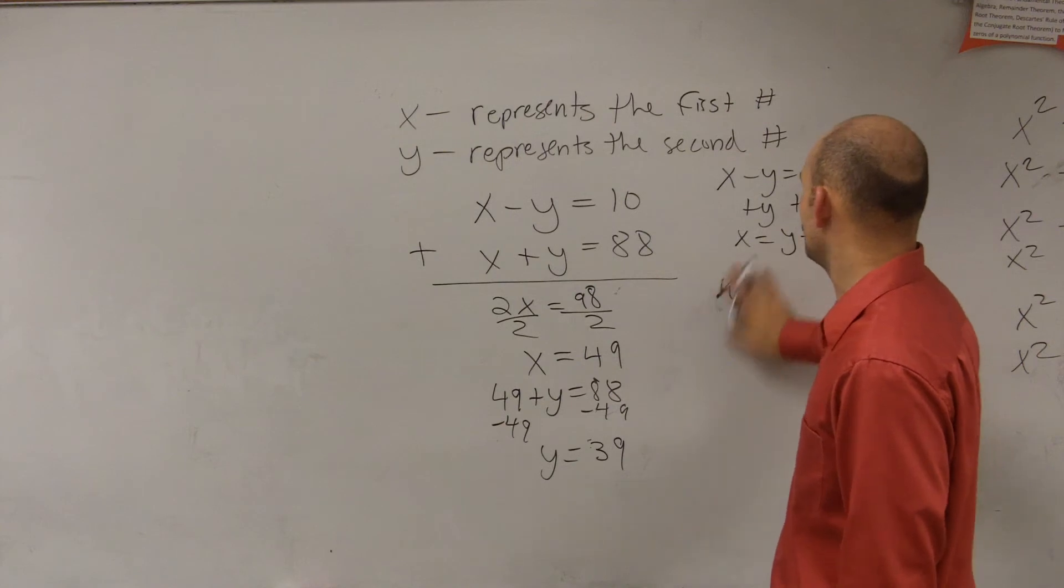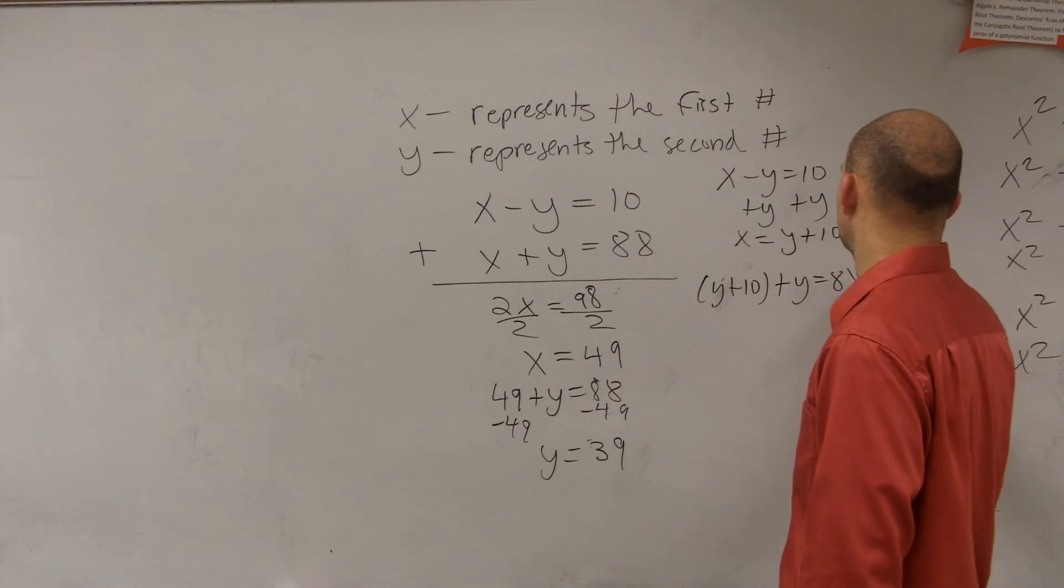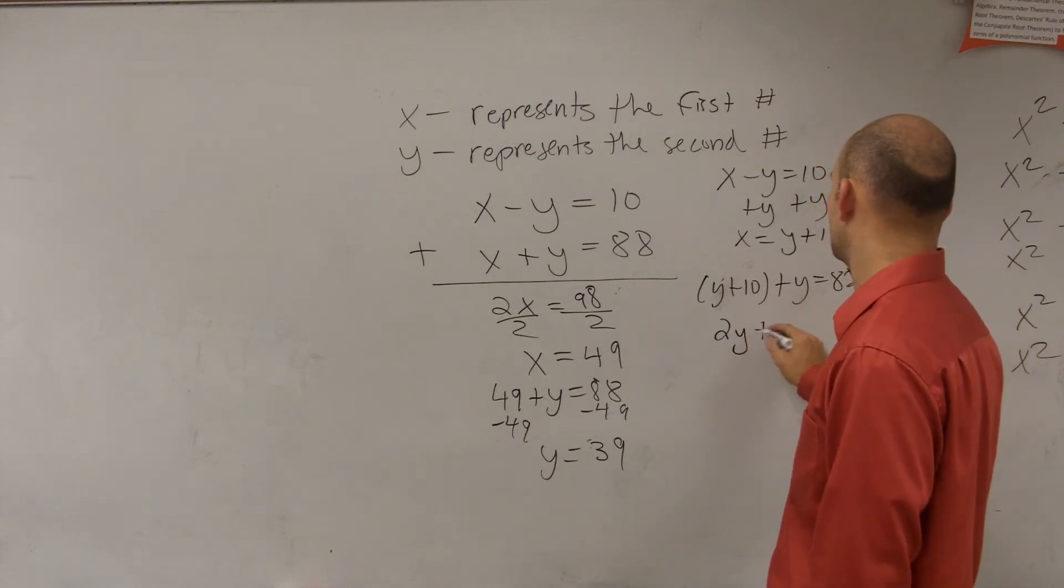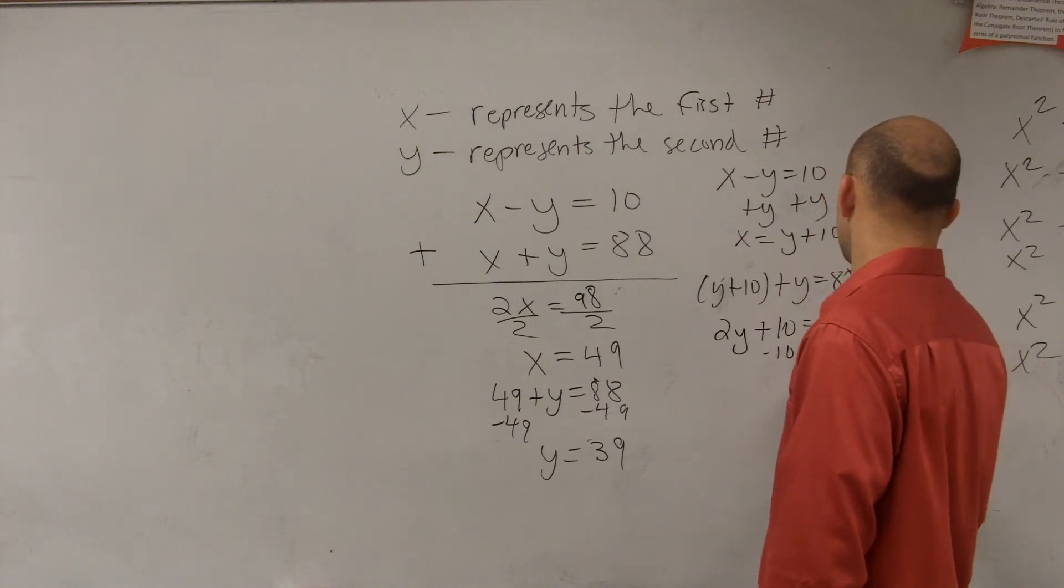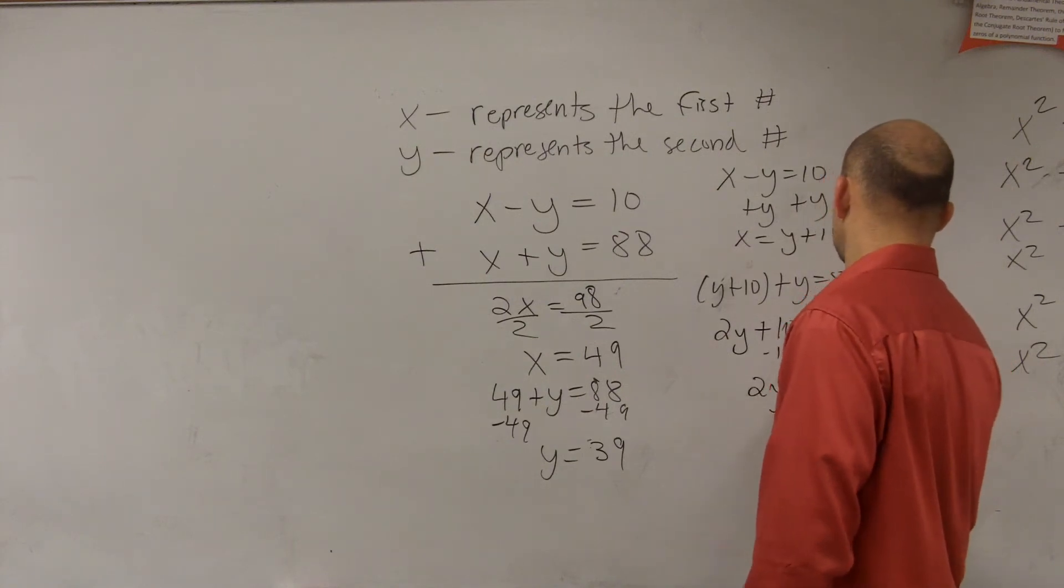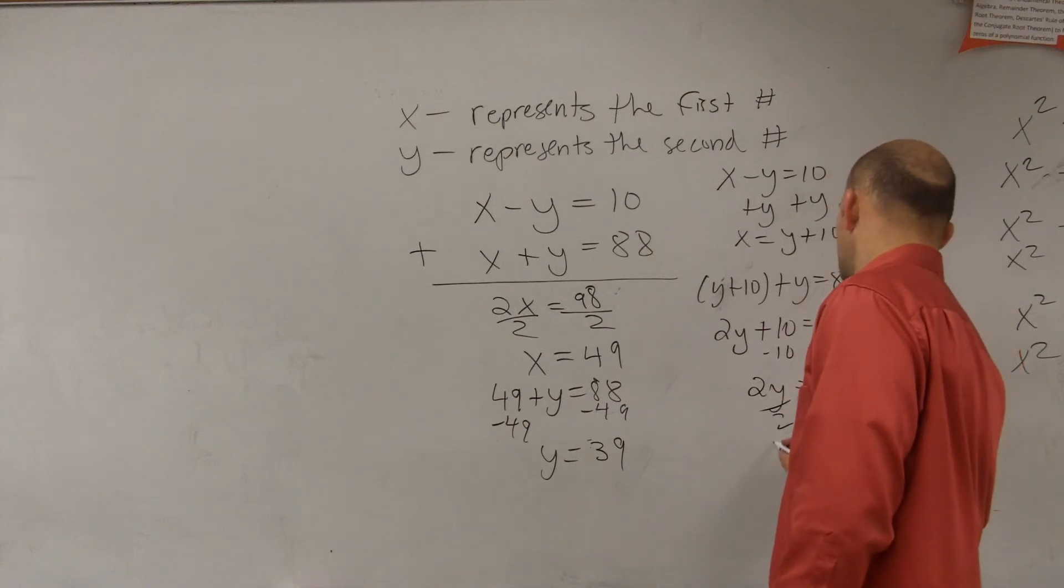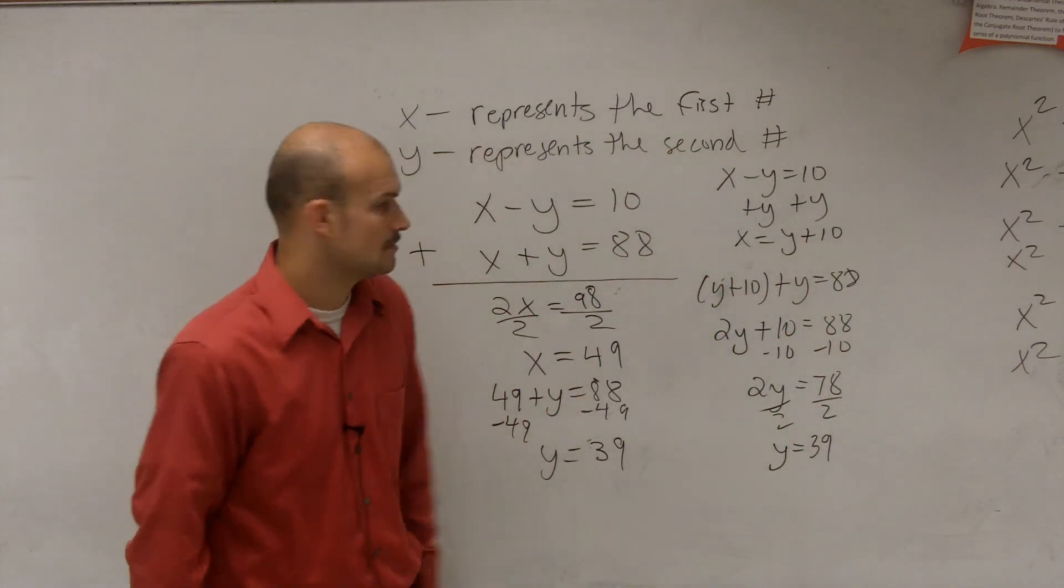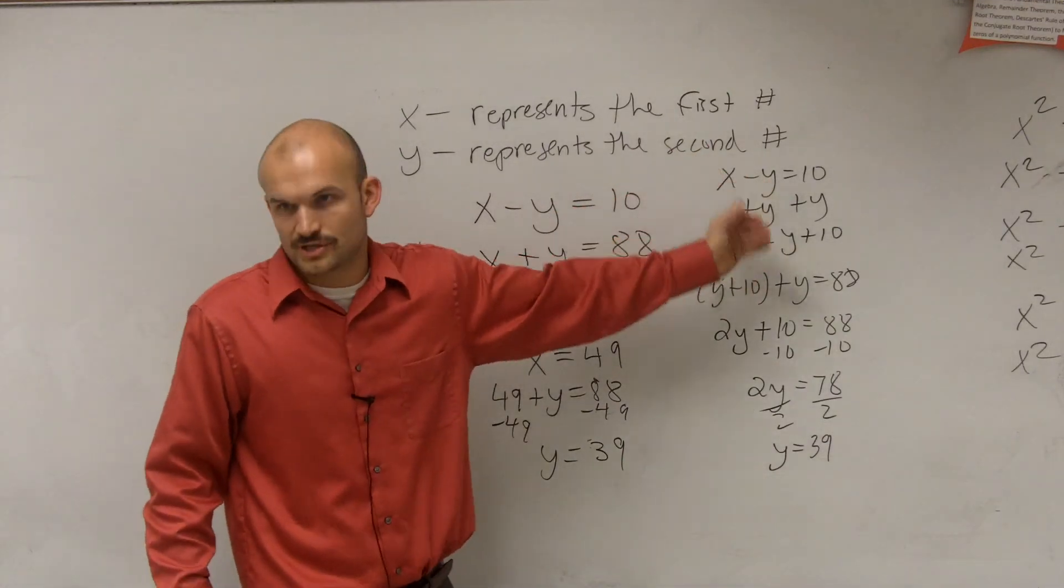x, I'm sorry, y plus 10 plus y equals 88. So therefore, 2y plus 10 equals 88 minus 10. This is done. Someone asked me to do substitution, so I want to show you substitution.